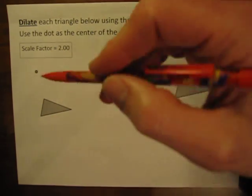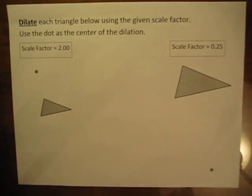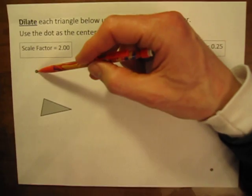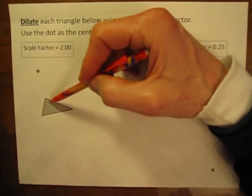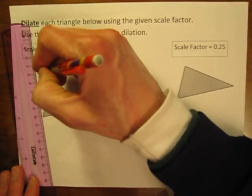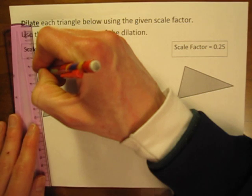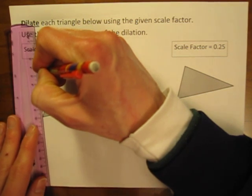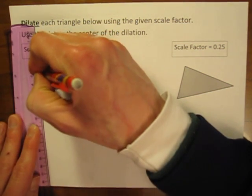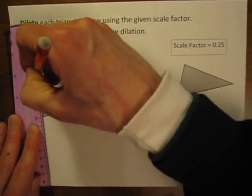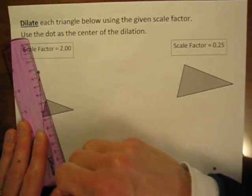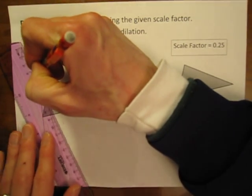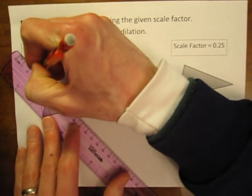So the first thing you do is you have to know where your center of the dilation is, and in this case it's these two dots that are on the paper. So this will be the center of the dilation for this one here. And the first thing you do is you take your paper and draw lines from that center of the dilation using your ruler through each of the vertices of your triangle, or whatever shape it is that you are dilating. So I'll draw lines through each vertex.